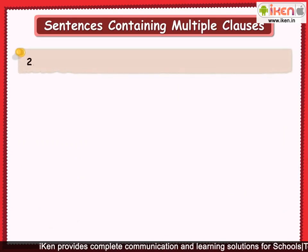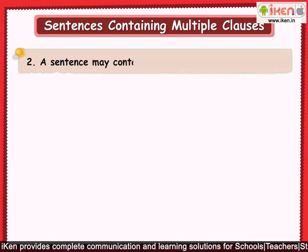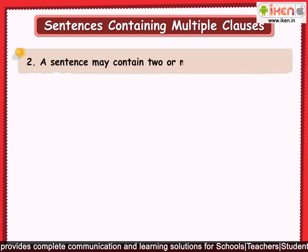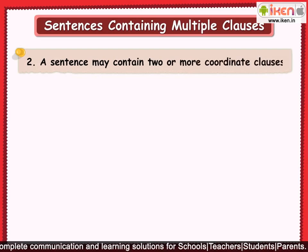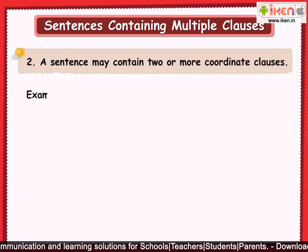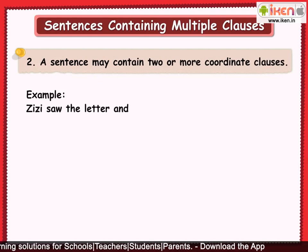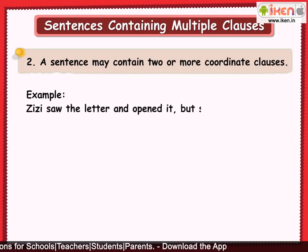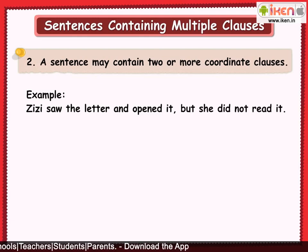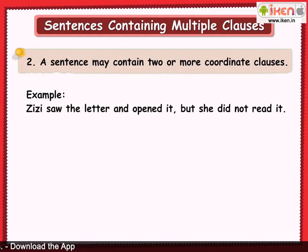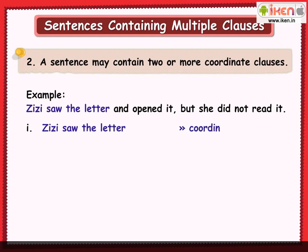Also, a sentence may contain two or more coordinate clauses. For example: 'Zizi saw the letter and opened it, but she did not read it.' In this sentence, there are three independent or coordinate clauses: 'Zizi saw the letter,' 'and opened it,' and 'but she did not read it.'